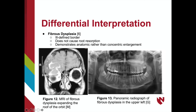Fibrous dysplasia is another possible differential interpretation. The key features that distinguish fibrous dysplasia are its ill-defined borders, lack of root resorption, and the anatomic enlargement seen compared to concentric enlargement. Figure 12 is an MRI of fibrous dysplasia expanding the roof of the orbit, and figure 13 shows fibrous dysplasia in the upper left quadrant.